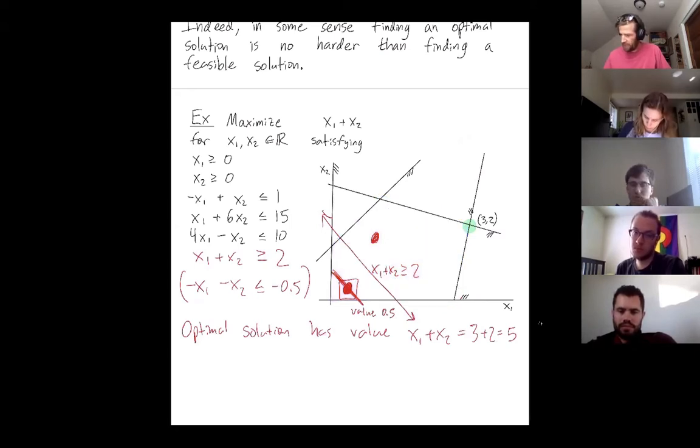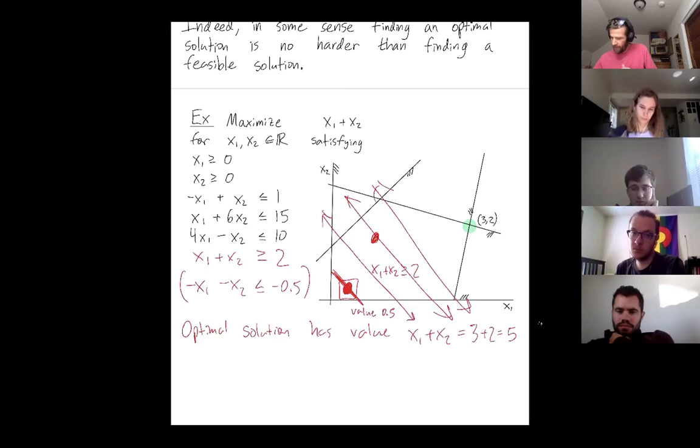And maybe this feasible solution has the value of, I don't know, 3. So then I keep doing this binary search and, you know, I just refine and refine and refine my feasible region. My feasible region is getting smaller and smaller until I'm converging on the optimal solution.